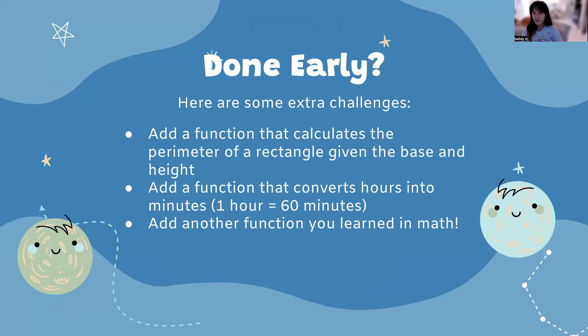At this point you should either be done with your project or ready to move on with extra challenges or need a hint. Here we have extra challenges for those of you that are done already. Add a function that calculates perimeter of a rectangle given the base and height. Second one, add a function that converts hours into minutes. So for example, if you inputted one hour, you would return 60 minutes. Or add another function that would do math. That could be exponents, if you've started to learn the quadratic function, if you've started to learn area, etc.